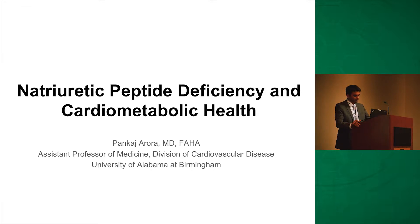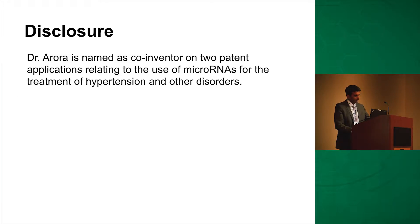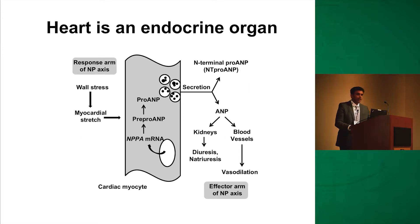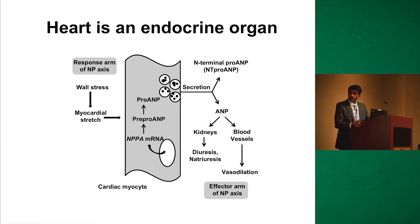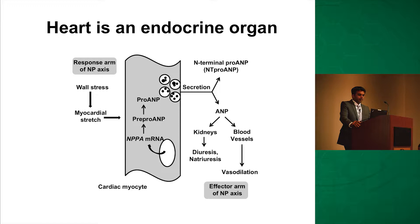I'm going to rehash some of the key concepts around the natriuretic peptide system. One of the underappreciated functions of the heart is that it is an endocrine organ. It secretes hormones, and this schematic describes ANP as a model hormone. When we have wall stress, we release natriuretic peptides. They go into secretion and have a plethora of biological effects on kidneys and blood vessels, including diuresis, natriuresis, and vasodilation. A key distinction is that this is a system that is causal in the development of disease and is also reflected as a consequence of disease.